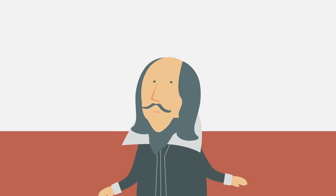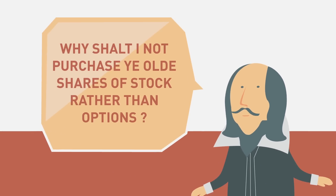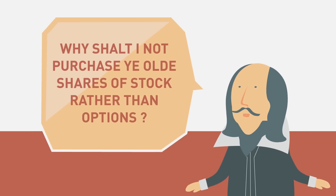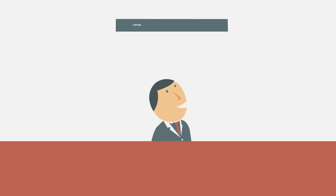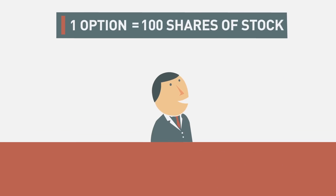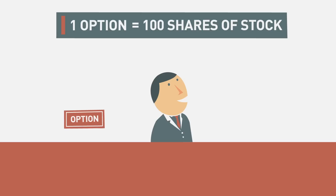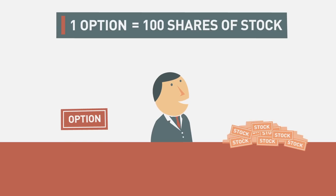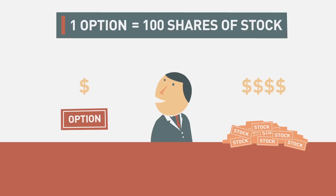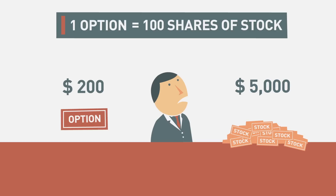You may be asking yourself: if I want to take advantage of the potential growth of a company, why wouldn't I just buy shares of stock rather than options? There are a couple of important reasons. First, remember that each option represents 100 shares of company stock. Instead of buying an option representing 100 shares, you could buy 100 shares of stock outright, but your out-of-pocket expenses will be far higher. For instance, you would pay $5,000 for the stock rather than the $200 for the option, while still participating in the appreciation of the stock.